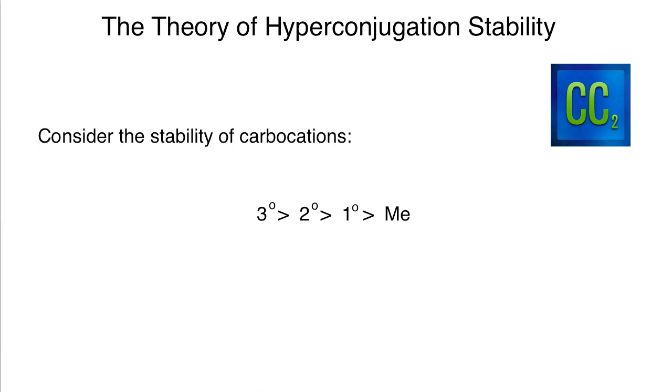So we say that a tertiary carbocation is going to be stabler than a secondary, which would be stabler than a primary, and then we have methyl here.